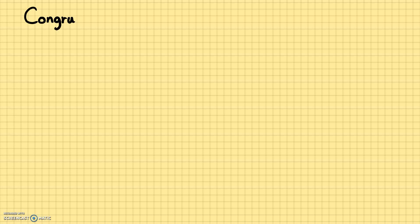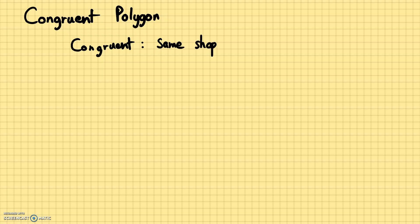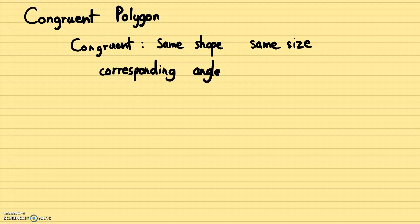Today, I'd like to go over congruent polygons. Congruent just means identical in terms of geometry. Basically, two congruent polygons have the same shape and the same size. And for congruent polygons, the corresponding angles and sides will be equal.